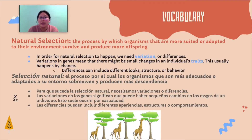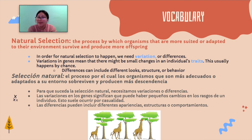Another important vocabulary term is natural selection. Evolution usually happens by natural selection, and this is the process by which organisms that are more suited or better adapted to their environment survive. You can see the three different heights of giraffes at the bottom — the one that is taller is more likely to survive because it can reach the leaves at the very top.